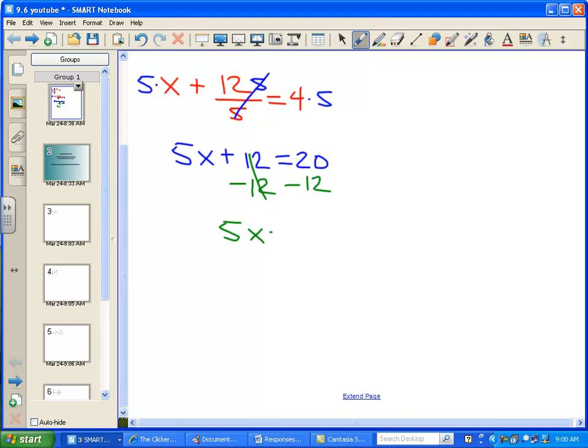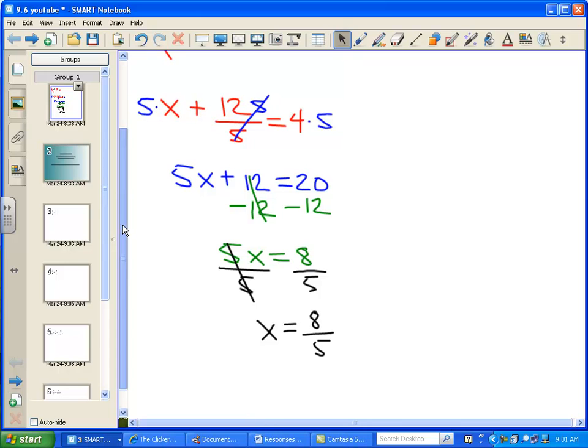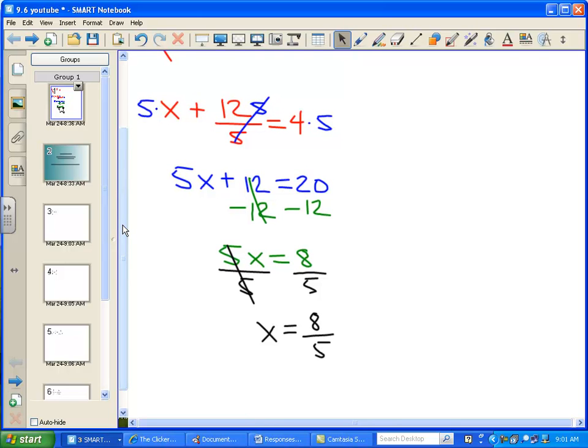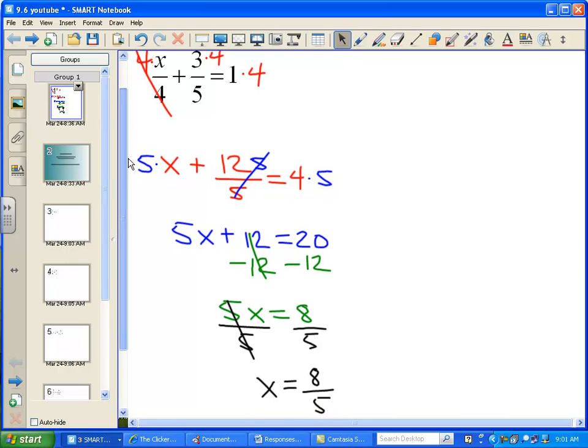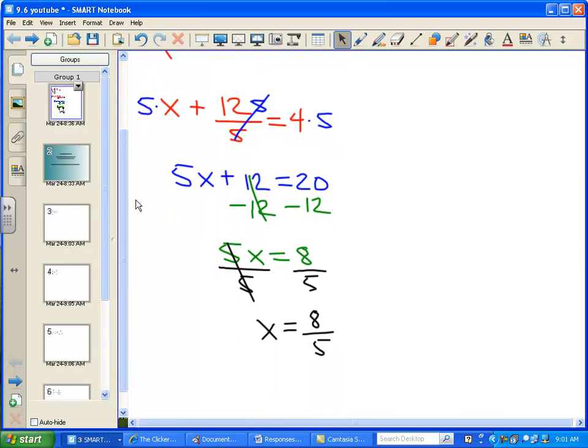I get 5x equals 8, and then when I divide by 5, I get x equals 8 fifths. If you do a quick check of your work back in the original problem, that solution does work. So there's your solution by fraction busting.